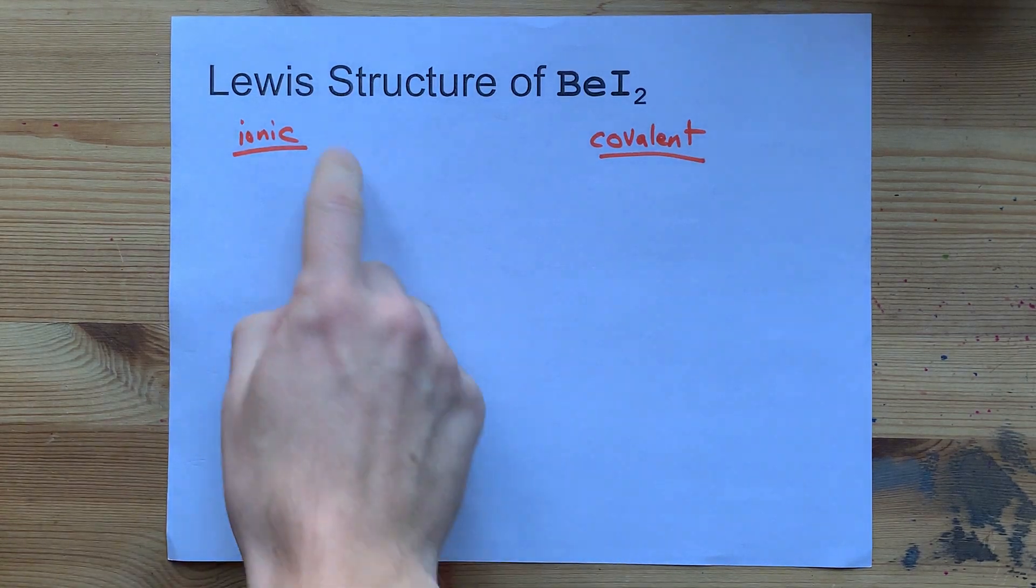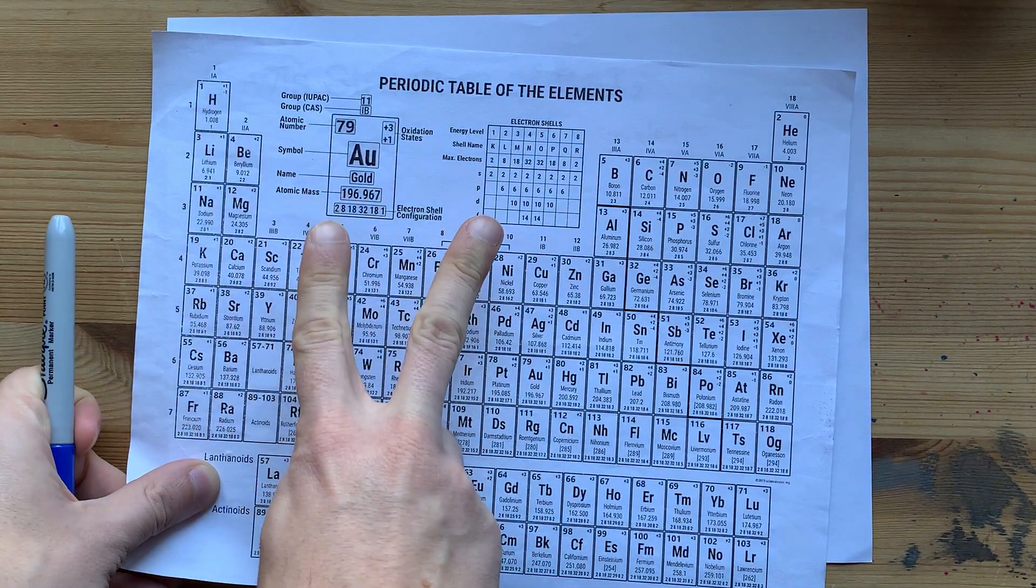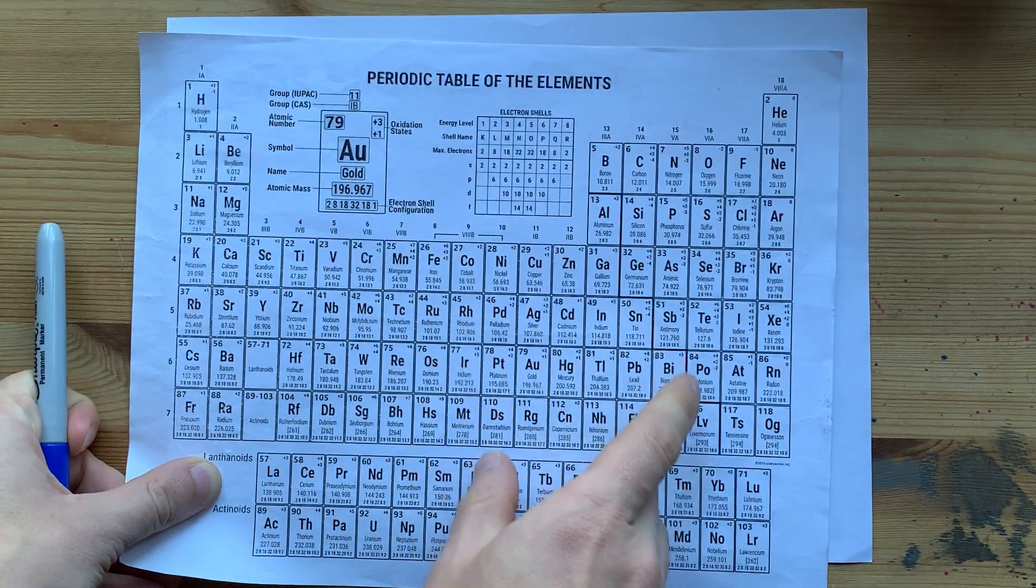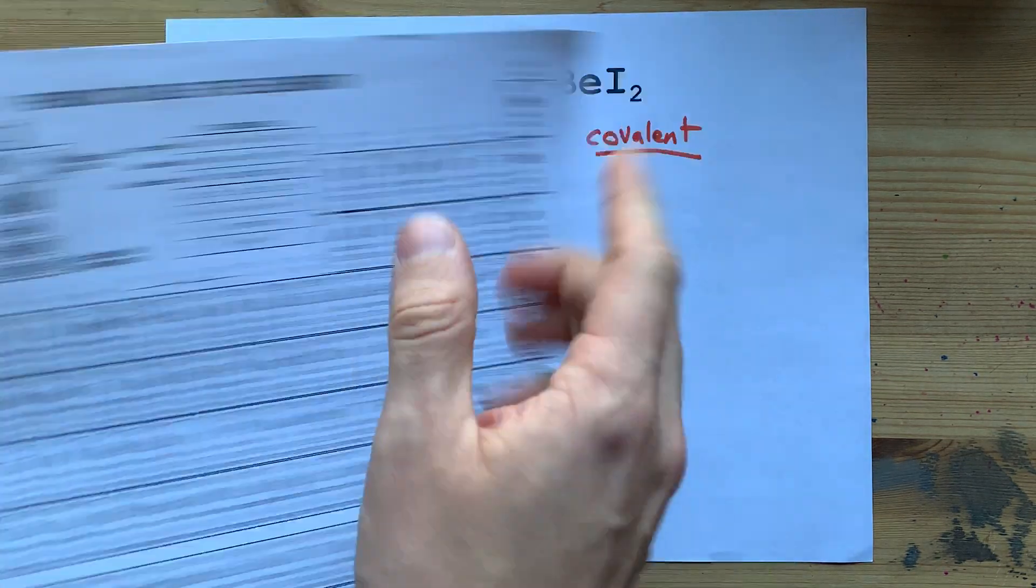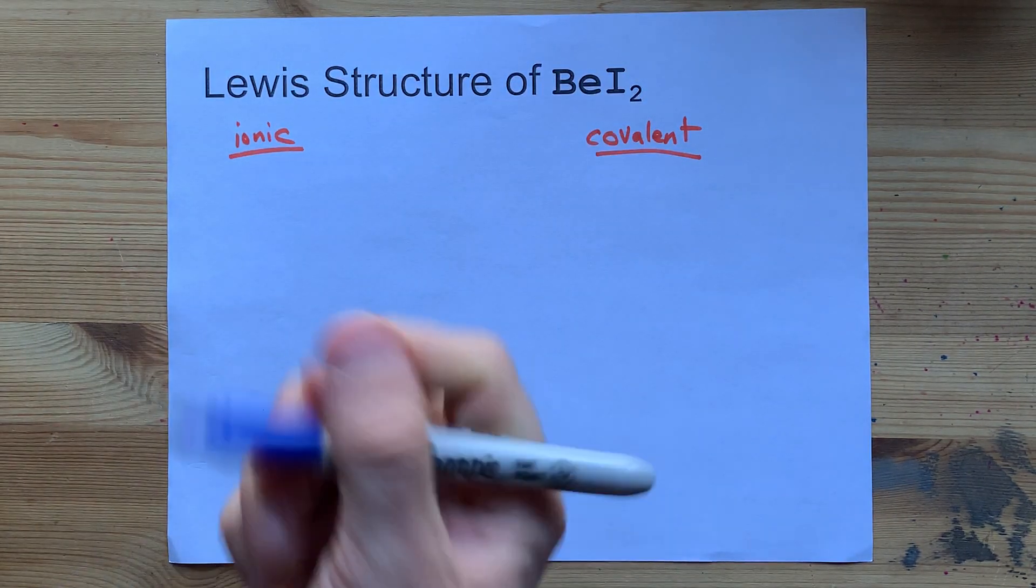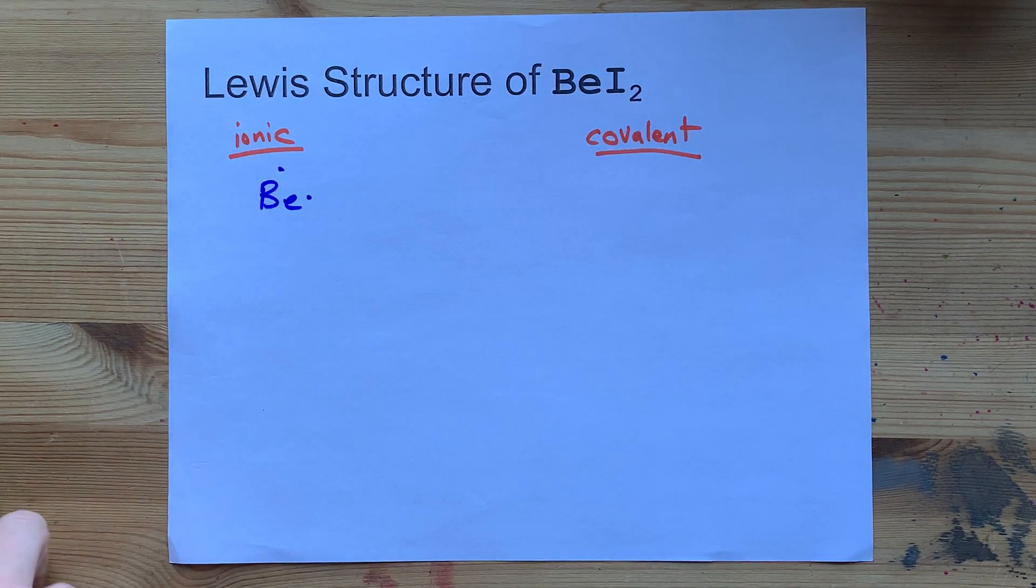Beryllium is in group 2 of the periodic table. It brings 2 valence electrons. Iodine is in group 17, the halogens. It brings 7 valence electrons. So I'm going to draw my beryllium with 1, 2 valence electrons there.